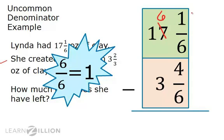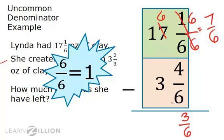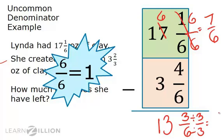6 sixths equals 1, so we can cross out the 7, leaving 6, and add 6 sixths to our 1 sixth, totaling 7 sixths. Now we can subtract: 7 sixths minus 4 sixths equals 3 sixths. 16 minus 3 is 13. Now we will simplify the fractional part using the greatest common factor. The greatest common factor of 3 and 6 is 3, so if we divide the top and bottom by 3, we get 1 half. Therefore the answer is 13 and 1 half ounces of clay.